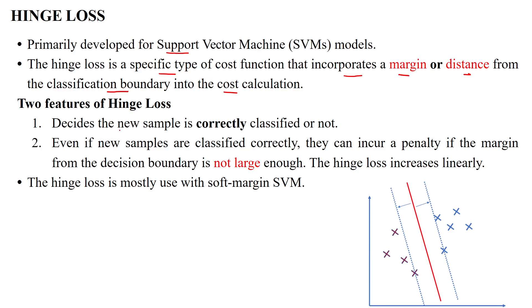There are two features available in the hinge loss. The first is deciding whether a new sample is correctly classified or not. In SVM, we have a decision boundary on a hyperplane with marginal distances for both the positive and negative classes. When a new sample enters the SVM model, the hinge loss determines whether it is correctly classified or misclassified. Even if samples are classified correctly, they can incur a penalty if the margin from the decision boundary is not large enough.